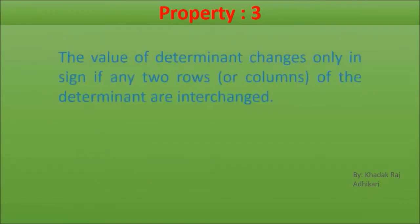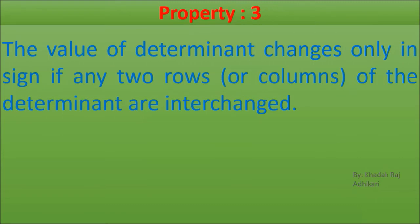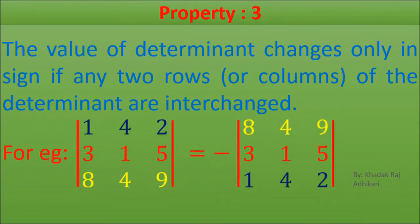Property 3: The value of a determinant changes only in sign when two rows or columns of the determinant are interchanged. When we interchange rows with rows and columns with columns and expand the determinants, their values will come out the same but with only a change in sign. Let's see this example.